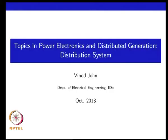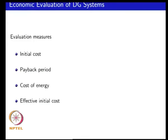Welcome to class 22 on Topics in Power Electronics and Distributed Generation. We were looking at economic metrics for evaluating distributed generation systems, talking about 4 of them: initial cost, payback period, cost of energy. We have been discussing the payback period, examples of payback period and cost of energy in the last class.